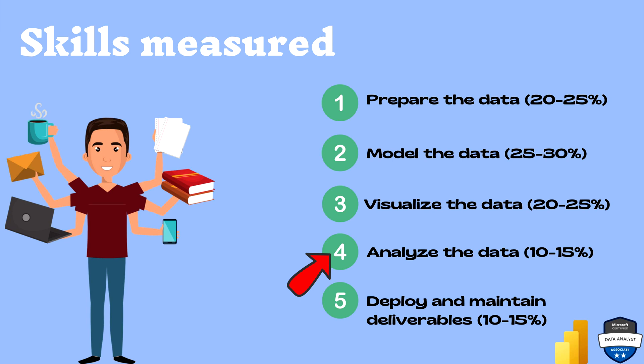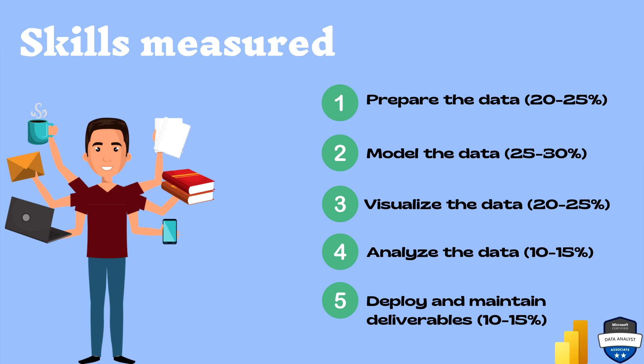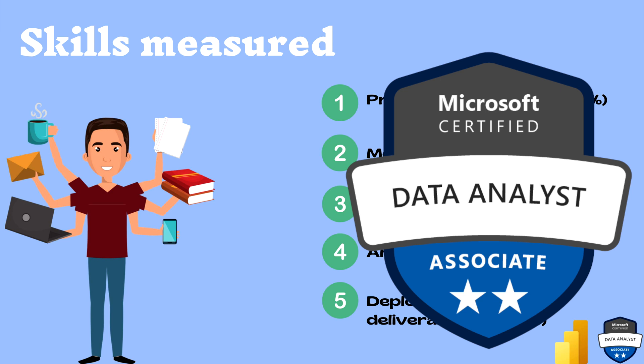The fourth skill is Analyze the Data — performing different analyses, creating measures, and using text — at around 10 to 15%. The fifth and last is Deploy and Maintain Deliverables, which covers deploying and publishing reports to Power BI service, delivering to customers, and implementing security, also at 10 to 15%. After clearing the exam, you will be awarded a certificate as a Certified Data Analyst Associate.